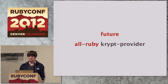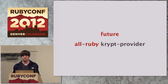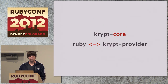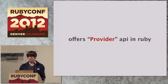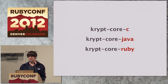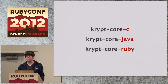In the hopefully not too distant future, my plan is to also write something that implements crypto entirely in Ruby. In between all this is the core layer — you can think of it as the link between the native world and the Ruby world. It offers a provider API in Ruby, and there are some performance-critical things that have to be implemented there, such as IO-intensive operations. That's why we currently have three different implementations: one for C-based Rubies, one for Java, and one written entirely in Ruby using FFI — which allows you to use OpenSSL in JRuby even though OpenSSL is written in C.